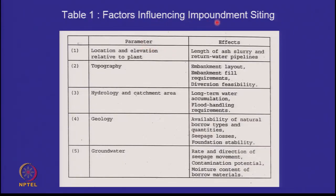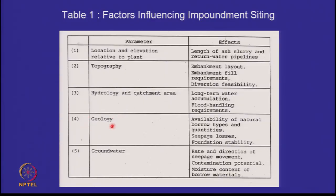The factors important for siting and layout include: distance from the thermal power station or processing plant and the elevation difference affecting pumping; topography; hydrology and catchment area — how much water will come into the pond from outside; geotechnical and geological features — available soil, bedrock depth, groundwater table, and foundation issues; and groundwater quality, seepage, and contamination potential. Typically, the key issue is simply where do you get enough land.